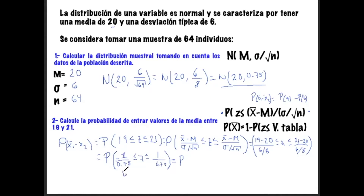Esto nos da -1.33 ≤ Z ≤ 1.33. Ya lo tenemos. Pero tendríamos que utilizar la propiedad correspondiente, de acuerdo al valor que nos da la tabla, y restárselo. El valor de la tabla que nos arroja Z = 1.33 sería, poniendo primero el mayor: P = 0.9082.